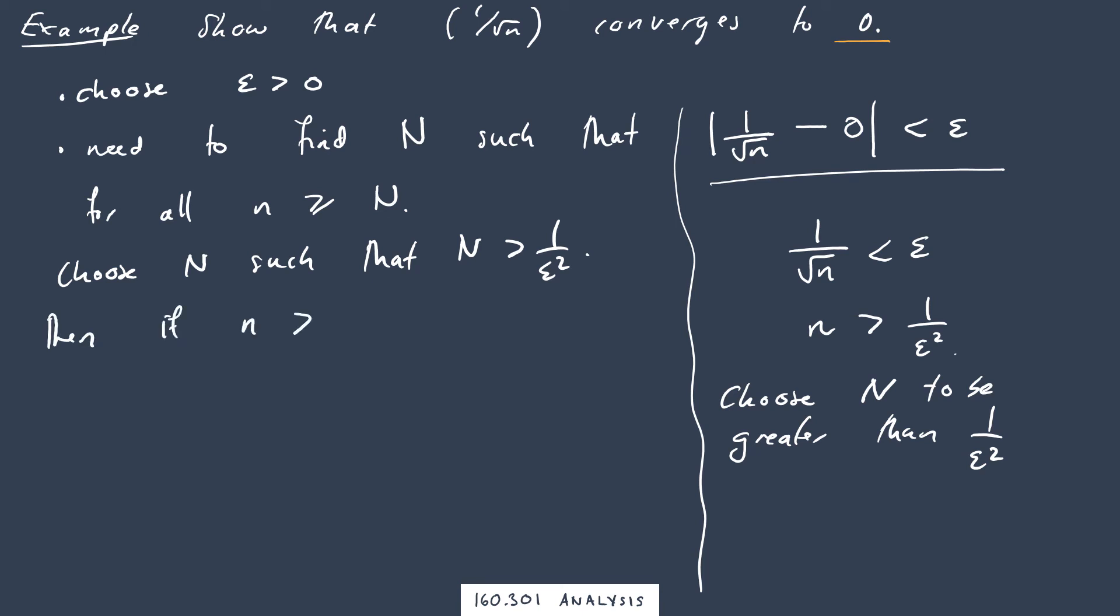Then, if n is greater than or equal to N, then n is also greater than 1 over epsilon squared, which implies that epsilon is going to be greater than 1 over the square root of n. Or, absolute value of 1 over square root of n minus 0 is less than epsilon. So what we've done is we've found a capital N such that for all little n's greater than it, our statement about distance from the sequence term here to the limit value 0 is less than epsilon here.